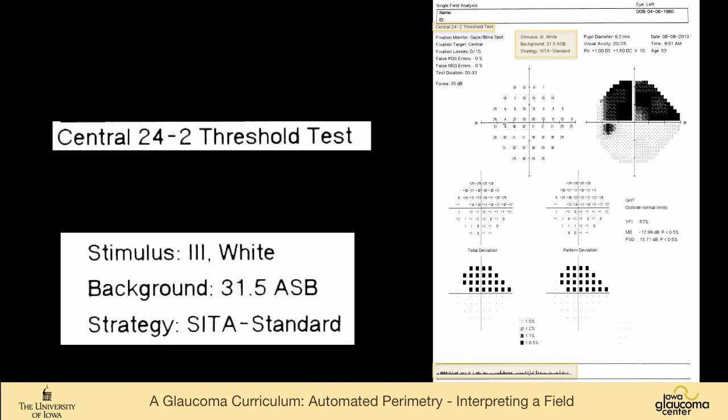It's a white-on-white or achromatic field. The background is 31.5 apostilbs. That's the normal background. That's not variable. It's in the Goldmann perimeter. So the test is done in a photopic way. It's not a dark perimeter, but the perimeter is illuminated. And the strategy here is SITA Standard.